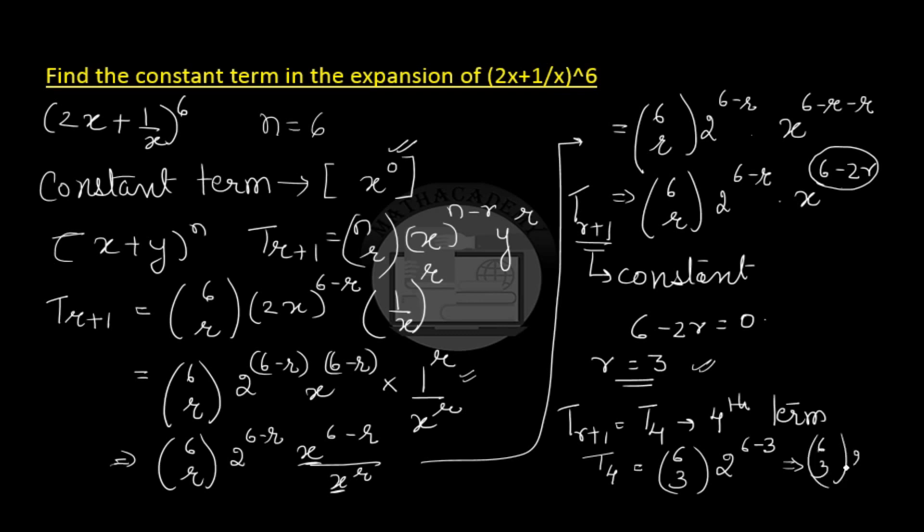So this gives us 6 choose 3, 2 to the power of 3. We can simplify and get the value of 6 choose 3, multiply it by the cube of 2, to get the constant term in the expansion of 2x plus 1 by x whole to the power of 6.